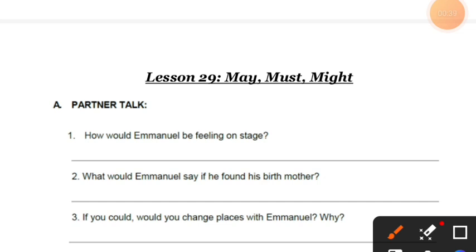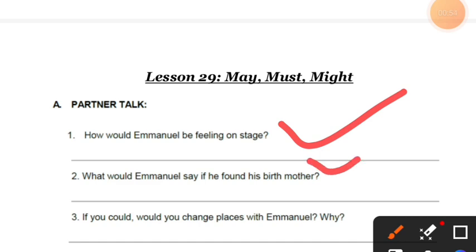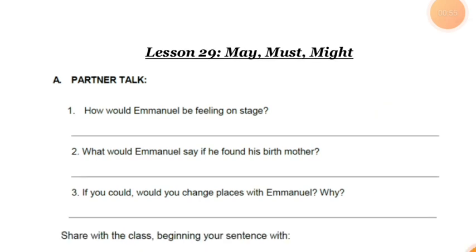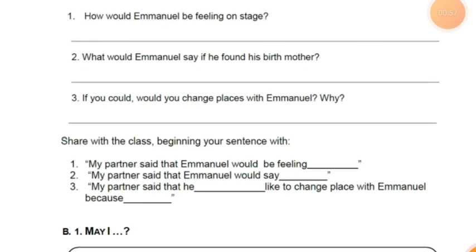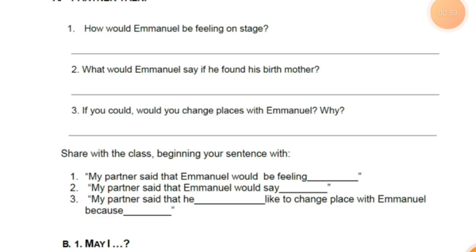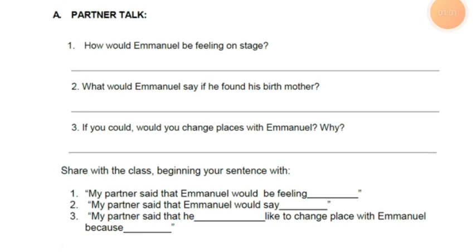First, what you have to do is watch one video. There is one famous person named Immanuel, and you are going to watch that video. After watching the video, you are going to discuss three questions with your partner, and you are going to write down their responses.